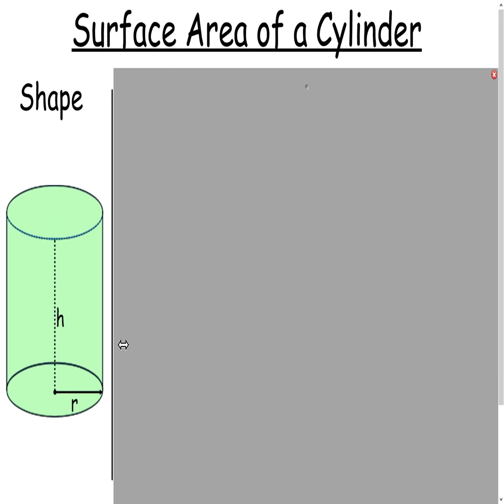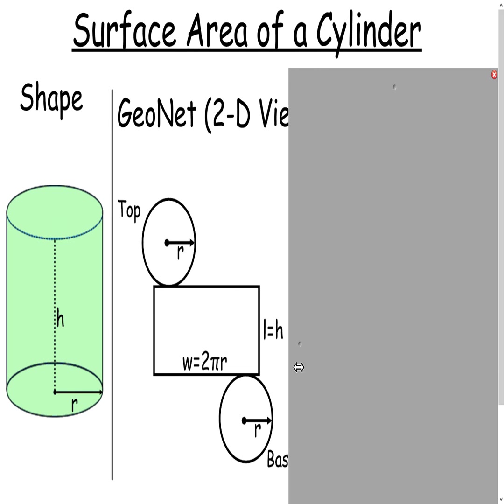To think of surface area, you have to take the cylinder and break it down into two-dimensional view. For the two-dimensional view, you see you have two circles that make up the top and the base. You have to find the areas of those circles, and we know that from our formula for area of a circle, it's pi r squared.